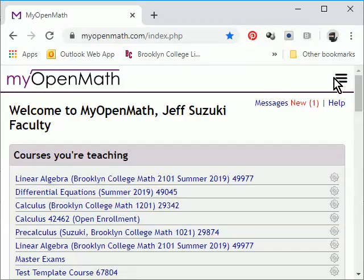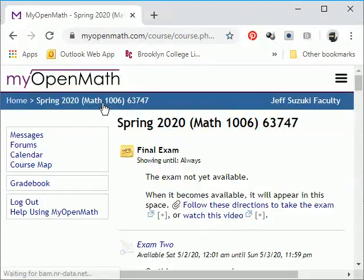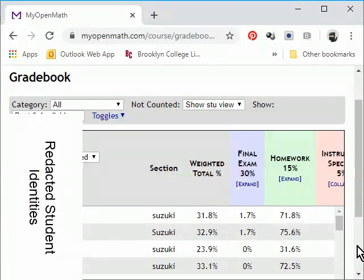To grade the exams in MyOpenMath, open up the course. Click on the grade book. Scroll until you see the exam column.